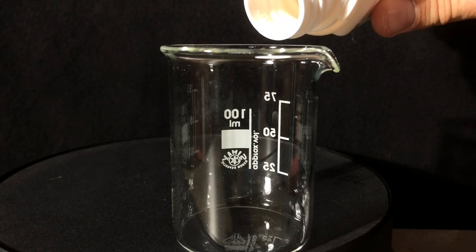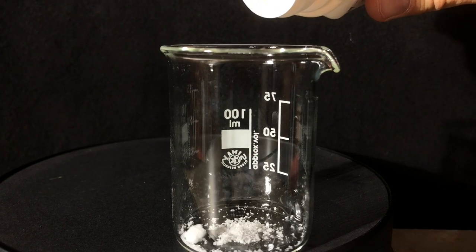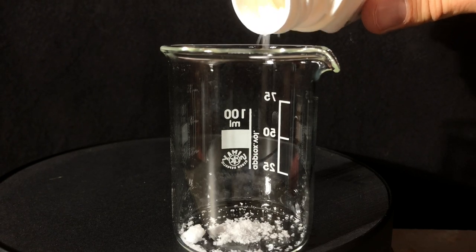To start off with the experiments, 1-2 grams of silver nitrate were added to a beaker. The exact amount doesn't matter as it will look beautiful either way.